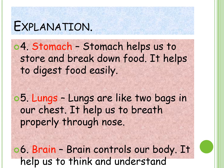Next is lungs. Lungs are like two bags in our chest. They help us to breathe properly through the nose. Lungs are the internal organ of our body and the nose is the external organ, and both organs are interrelated — the nose helps us to breathe. Next is brain. The brain controls our body. It helps us to think and understand anything very easily. The brain is the main organ of our body and it controls everything — head, eyes, nose, hands, legs — everything.